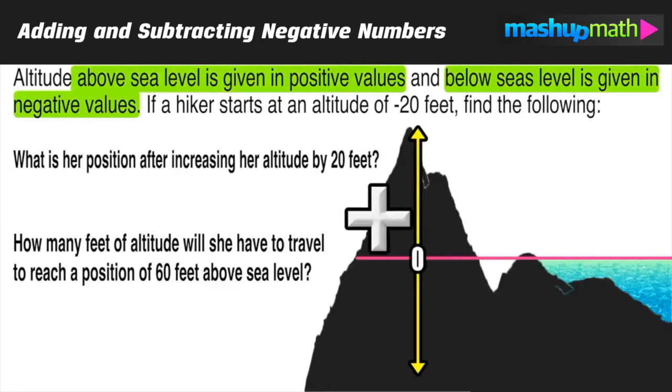Now remember that the area above sea level is positive values and the area below is negative values. Now our hiker's starting position is at an altitude of negative 20 feet, so that's 20 feet below sea level.